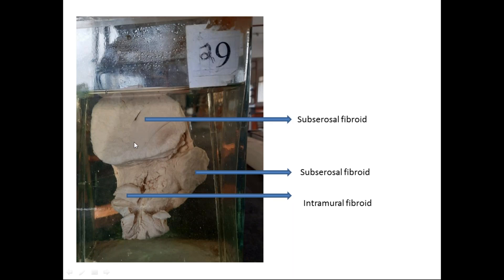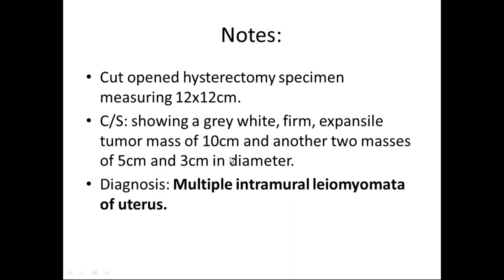This is another specimen from our lab showing multiple leiomyomas — hence the term leiomyomata. There are three fibroids visible: two subserosal and one intramural. The cut-open hysterectomy specimen measures 12 x 12 cm. Cut surface shows a grey-white firm expansile tumor mass of 10 cm, and two additional masses of 5 cm and 3 cm in diameter. The diagnosis is multiple intramural leiomyoma of the uterus.